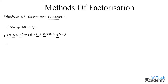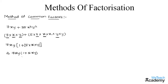By taking 7xy as the common factor, in the first term we are left with 1, and in the next term we are left with 5 × x × y. So we can write this as 7xy × (1 + 5xy). We can say that 7xy and (1 + 5xy) are the factors of the expression 7xy + 35x²y².